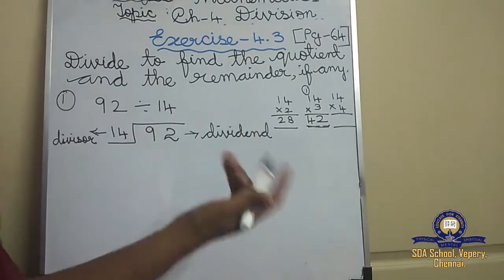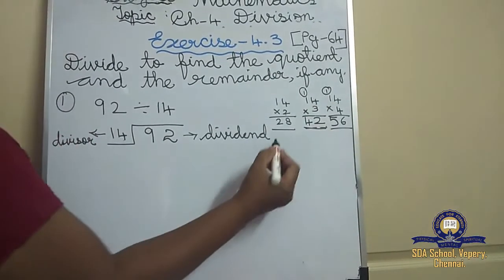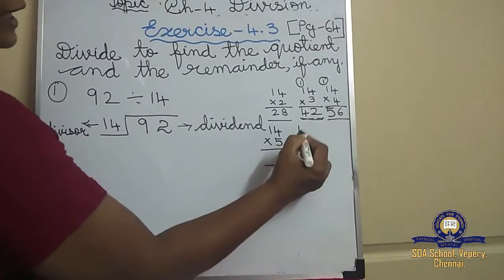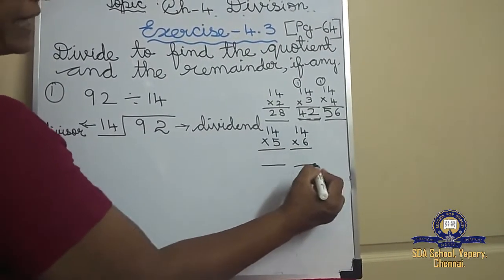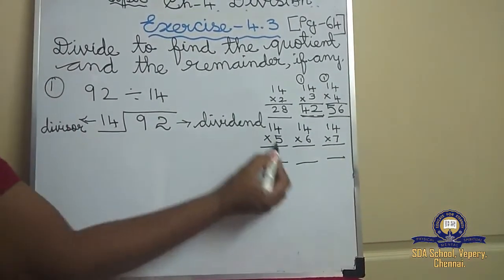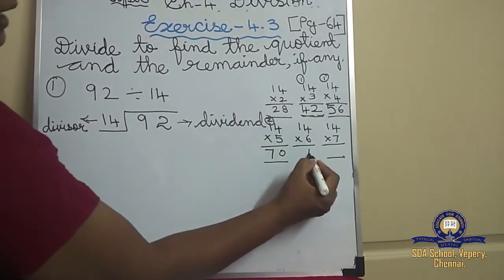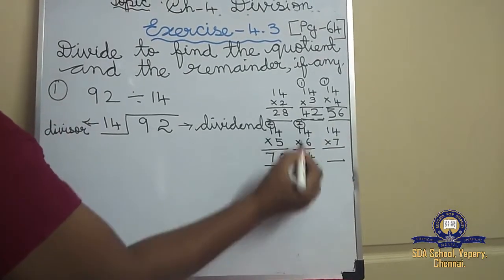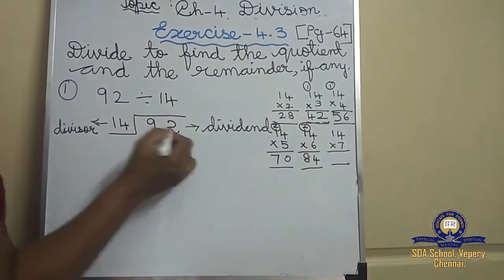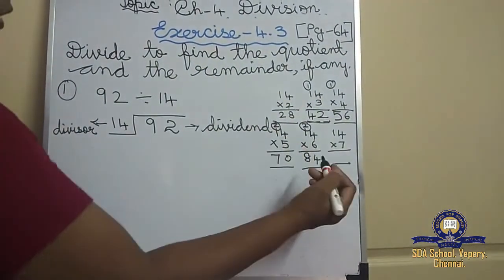Continuing: 14 sevens — 7 fours are 28, 7 ones are 7, plus 2 is 9, so 98. But the dividend is 92. Can we write 98? No. So what's the number before that? 14 sixes are 84. So you write 6 as the quotient and 84 below the dividend.